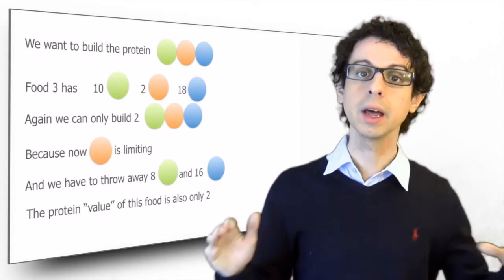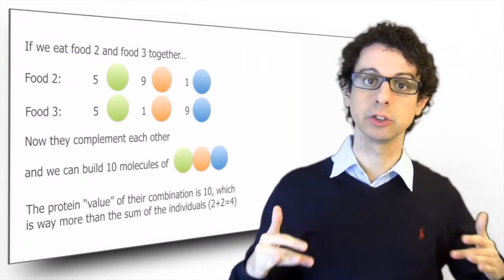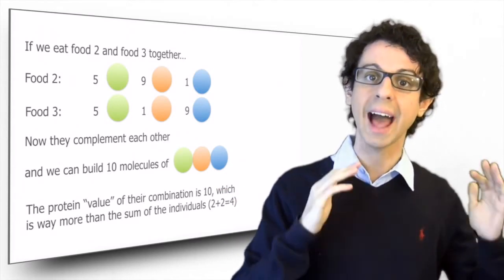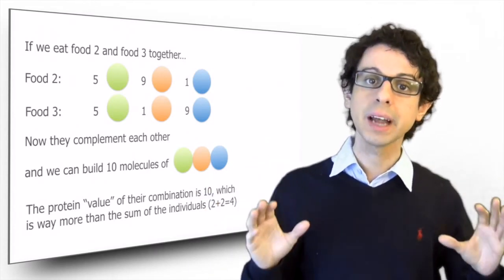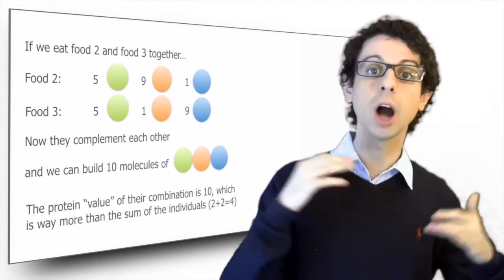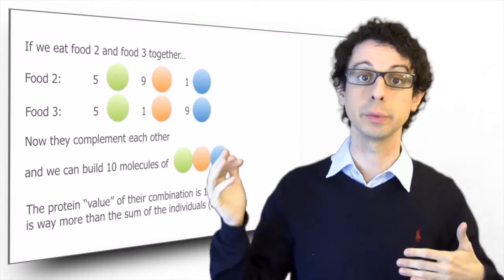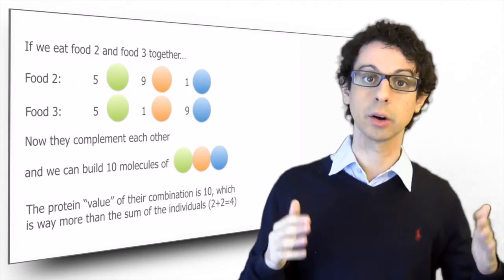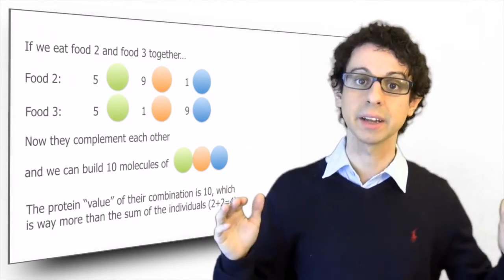So same protein content as food one, but much lower quality. But now imagine that we eat food two and food three together, and I half the amount of each because I want the total protein content to stay the same. So we eat half the amount of food two and half the amount of food three. And again, we have 30 total amino acids. But now the lack of orange in food three will be compensated by food two, and the lack of blue in food two will be compensated by food three. So how many copies of our protein can we now build? We have 10 green, 10 orange and 10 blue amino acids. So now we can again build 10 copies of our protein and we don't have anything to discard.